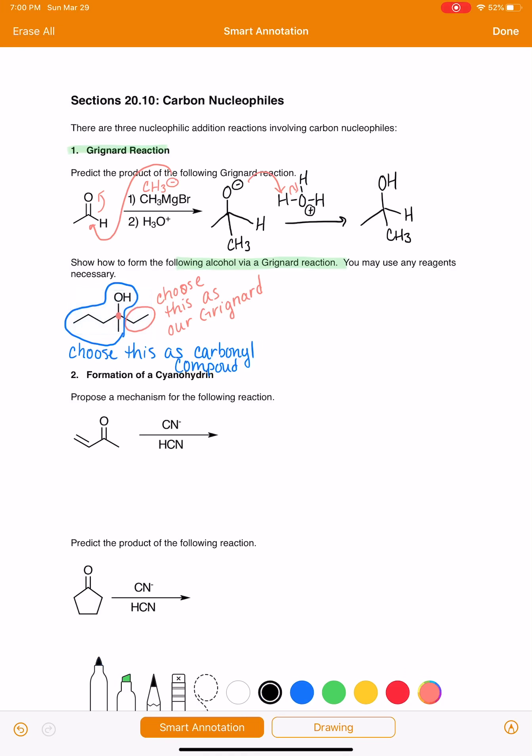So what we want to do is just kind of visualize this reaction happening in reverse. I'm going to draw the alcohol that we're forming here. And the last step of this, in the Grignard reaction, if we look up to the one above it, the last thing that's happening is protonation of the oxygen to make the alcohol. So let's just kind of write that out. Immediately before we form the alcohol, we have this guy right there.